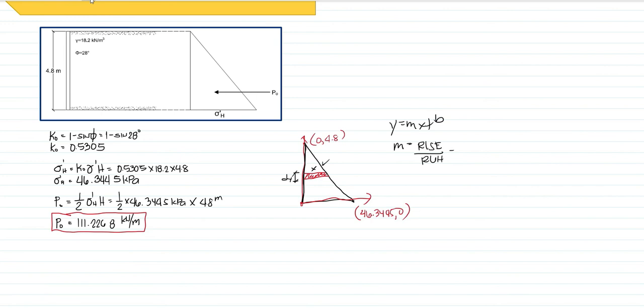So our rise will be equivalent to, let's set this one as the first point, this is the second point. So that will be, our rise is 4.8 minus 0. Then what's below is a value, since this is the first point, so that is 0 minus 46.3445. So simplifying that one, our m now is equal to negative 9,600 over 92,689.